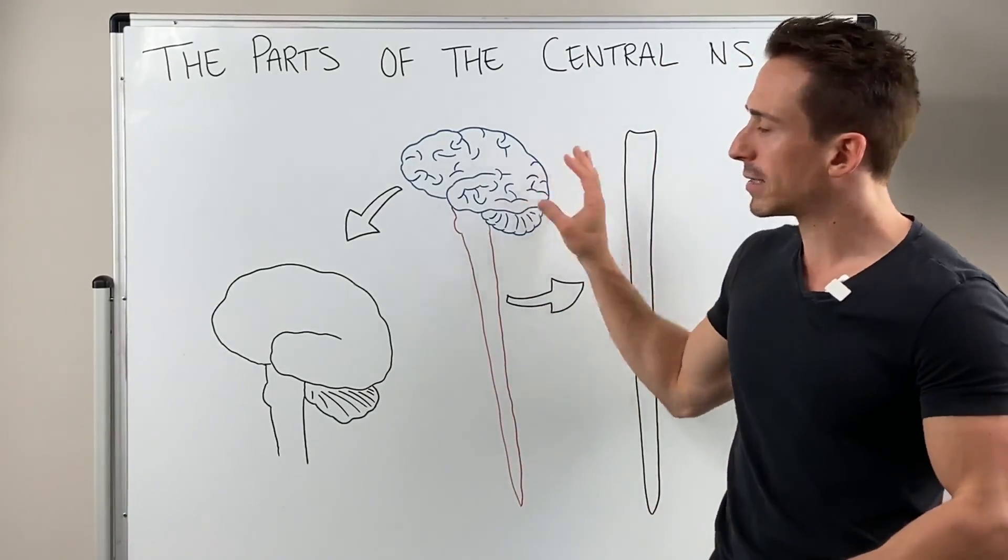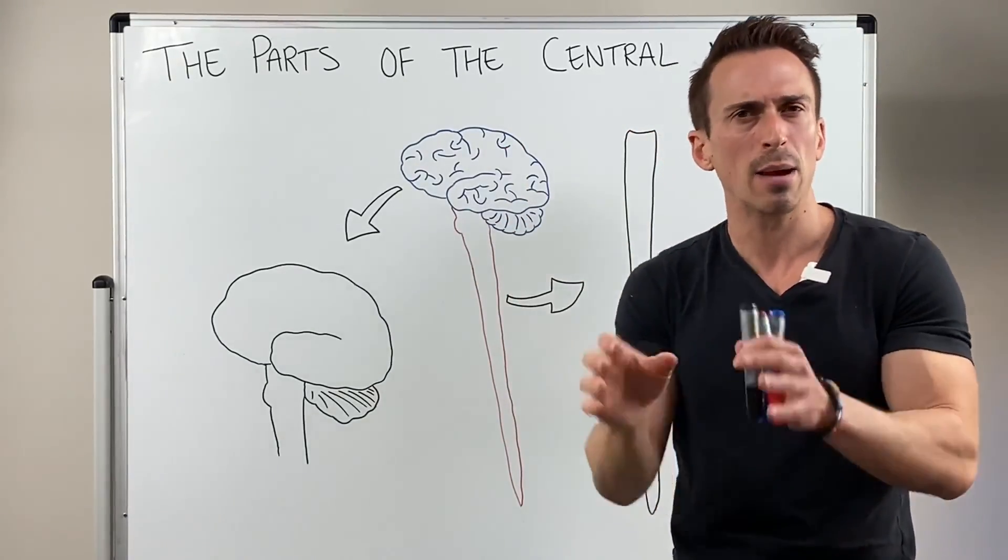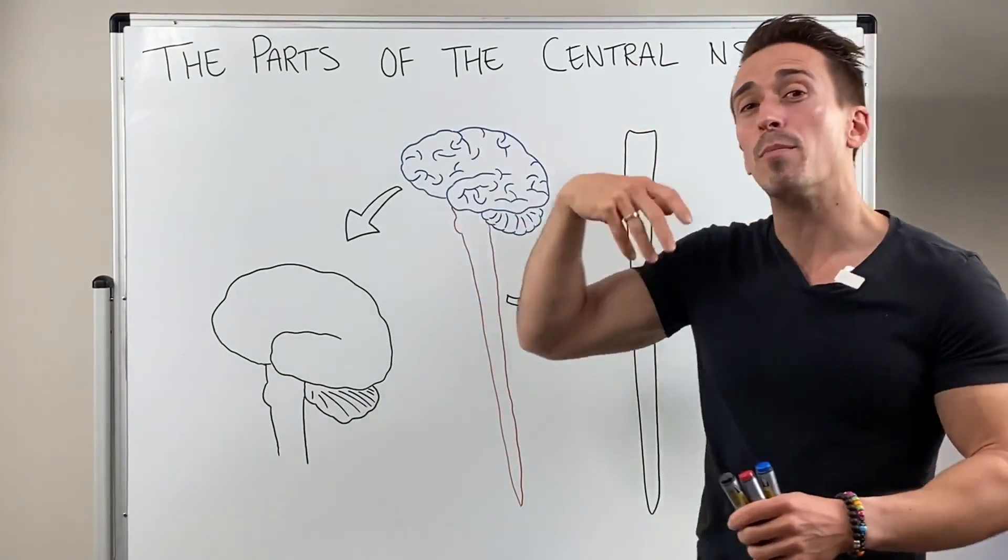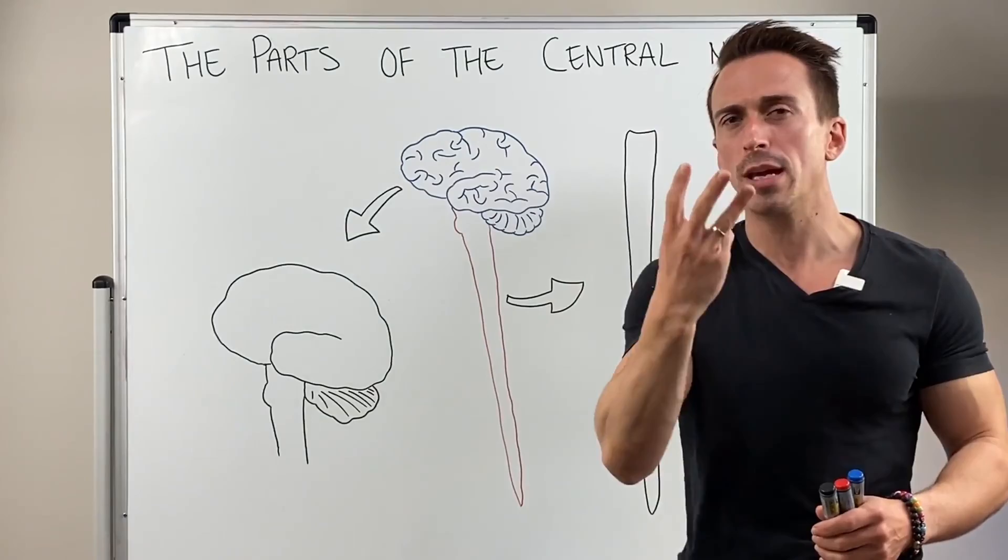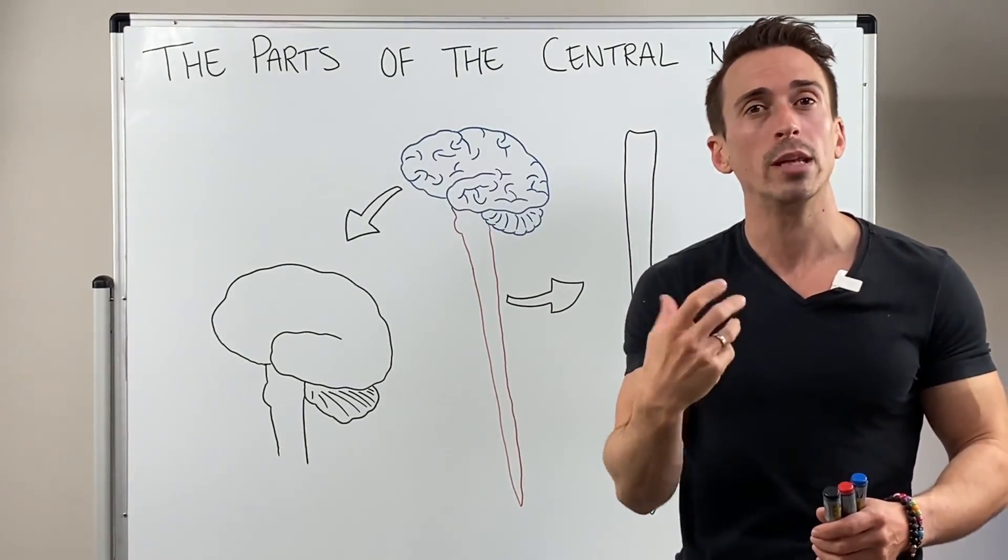Now if we look at the brain itself, first thing I want to begin with is the fact that the brain sits within a skull casing, that bony structure that we call the skull. But above the brain, but below the skull, there's actually three protective layers of the brain that we term the meninges or meningeal layers.